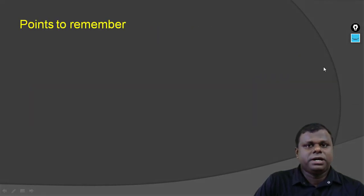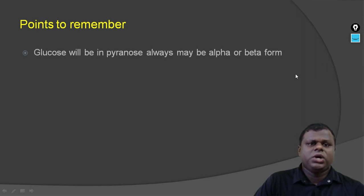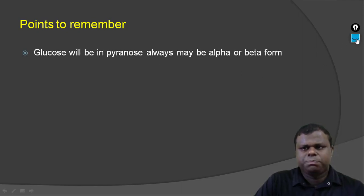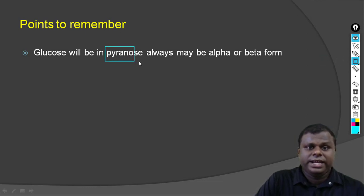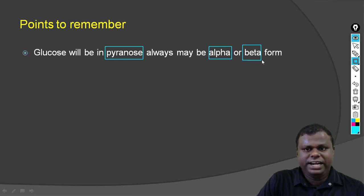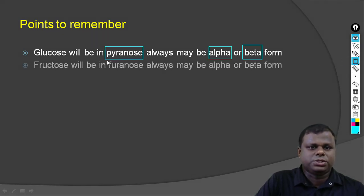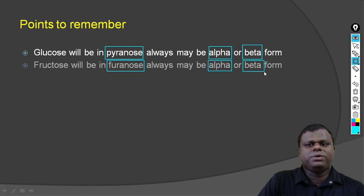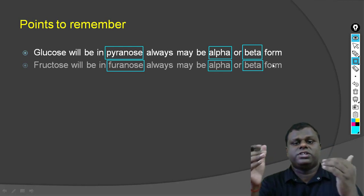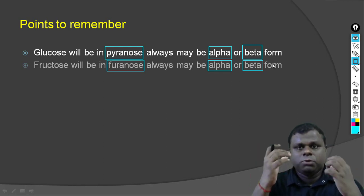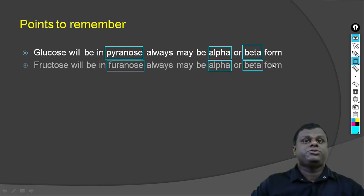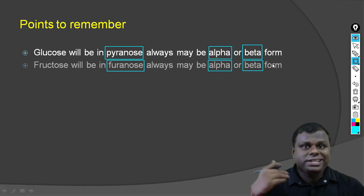There are certain points to be remembered before we do the structure. The first point is glucose will always be in the pyranose form — it may be alpha or it may be beta, but it has to be in the pyranose form in all the structures. The next is fructose will always be in the furanose form — it can be alpha or it can be beta. We are going to discuss the disaccharide structures, and in all these structures the monosaccharides are going to be in their natural form in which they are most abundant.